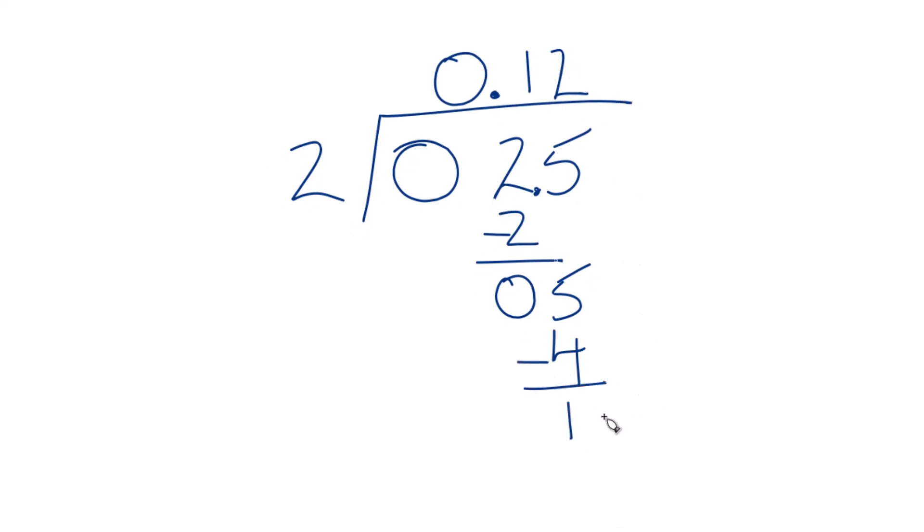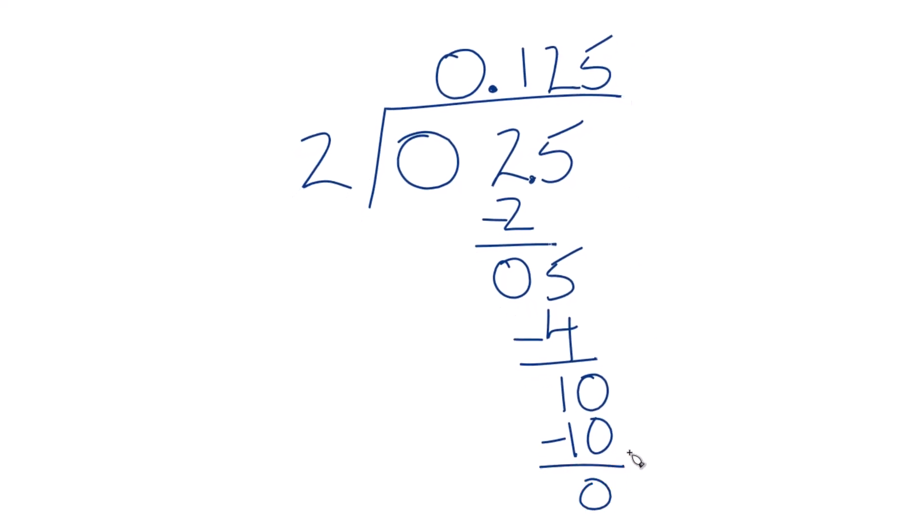We're going to move over one place. We'll call this 10, 5 times 2, that's 10, subtract, we get 0.